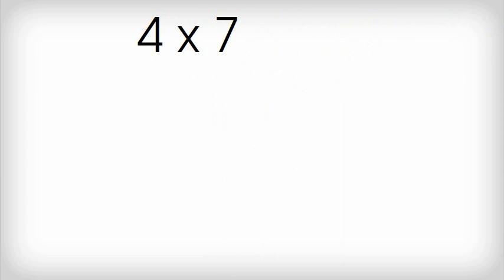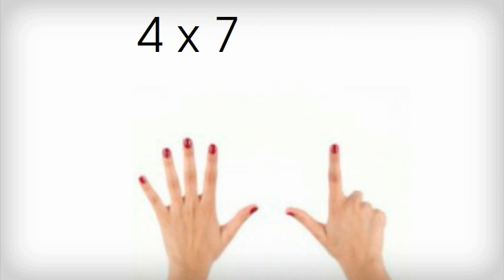Now we're going to do four times seven. So I hold up seven fingers and I count by fives. Five, ten, fifteen, twenty, twenty-five, thirty, thirty-five.